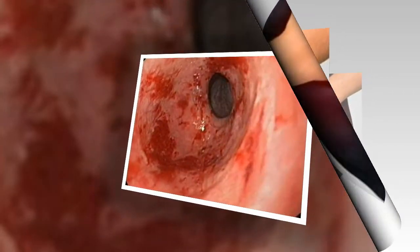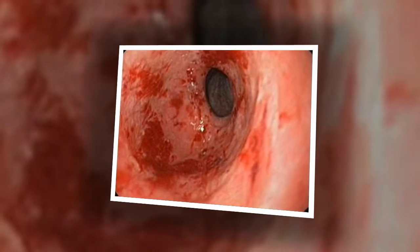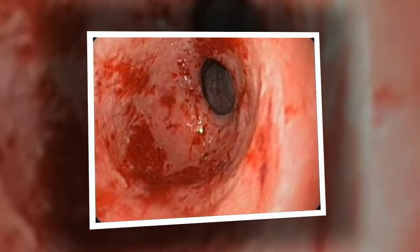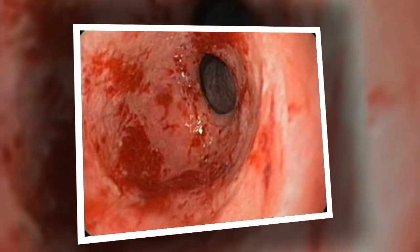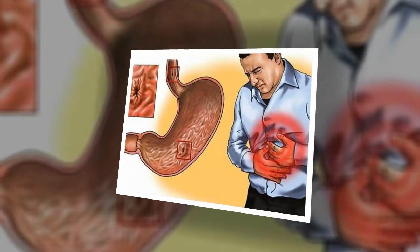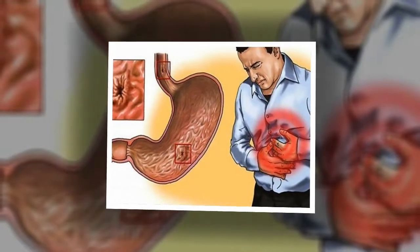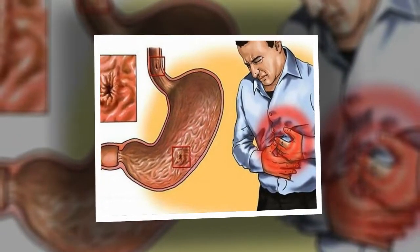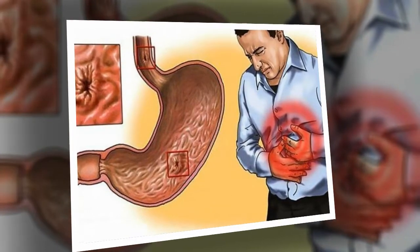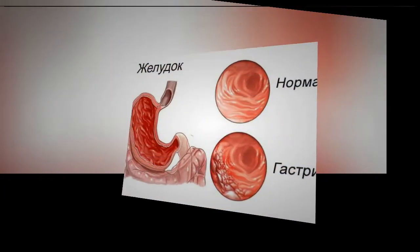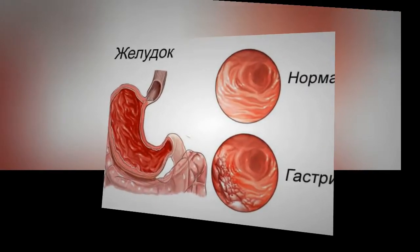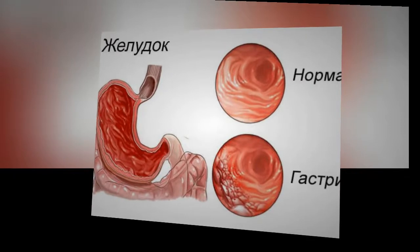Blood tests may also be performed, such as checking your red blood cell count to determine whether you have anemia, which means you do not have enough red blood cells. The doctor can also screen for H. pylori infection and pernicious anemia with blood tests. Additionally, a fecal occult blood test checks for the presence of blood in your stool, which is a possible sign of gastritis.